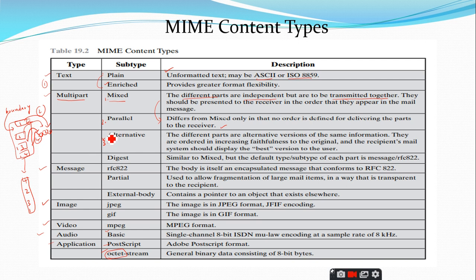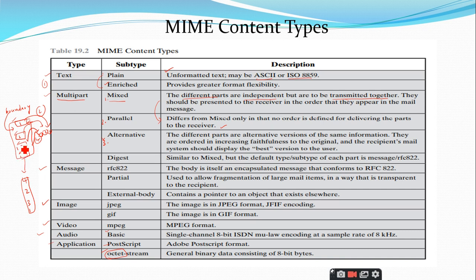The alternative subtype has different parts that all represent the same message but expressed in different versions. For example, a body divided into four parts where all four represent the same content in different ways. At the receiving end, the receiver's agent selects the best version and presents it to the end user.